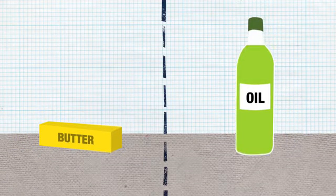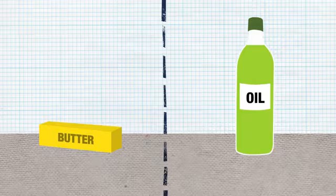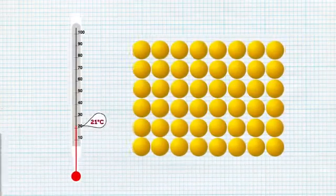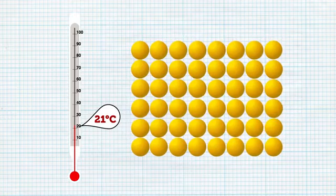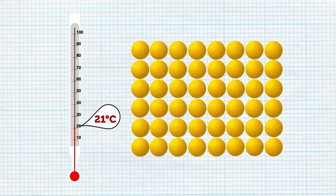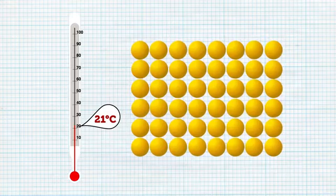At room temperature, butter is a solid and olive oil is a liquid. Temperature is a measure of the average kinetic energy of all the molecules that make up a substance. That means it tells us how fast the molecules are moving.